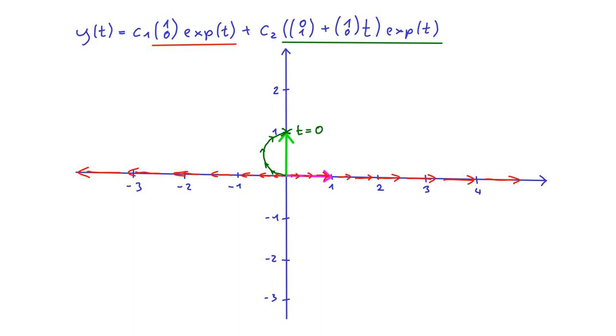As t goes to plus infinity, it actually amplifies the growth effect of the exponential of t, so we have a fast growth. And that growth points more and more in the direction of 1,0 again. However, also in the direction of 0,1 there is still a growth. So effectively, we have a curve like this. This is for c2 equals 1 and c1 equals 0. So if we take a negative c2, like c2 equals minus 1, we get the flipped version of this curve.